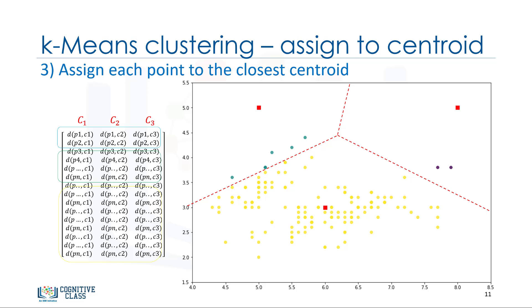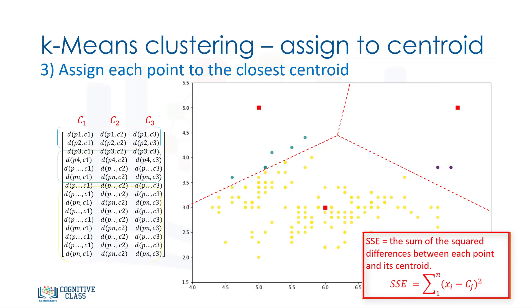We can easily say that it does not result in good clusters, because the centroids were chosen randomly from the first. Indeed, the model would have a high error. Here, error is the total distance of each point from its centroid. It can be shown as within cluster sum of squares error.